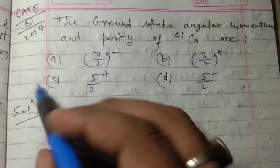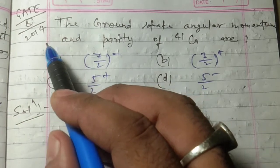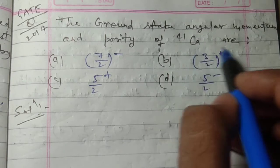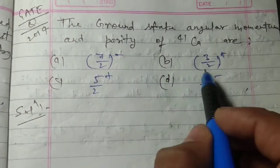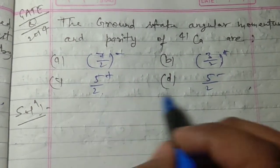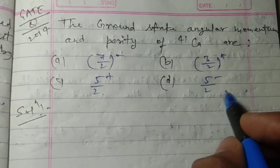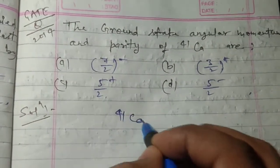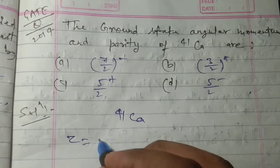And the next question, which was asked in 2014: the ground state angular momentum and parity of calcium-41 are: (a) 7/2 minus, (b) 3/2 plus, (c) 5/2 plus, or (d) 5/2 minus. So here the given nucleus is calcium-41.